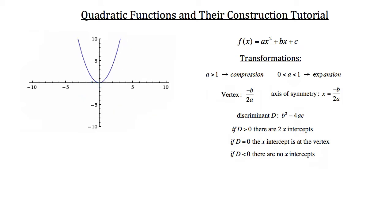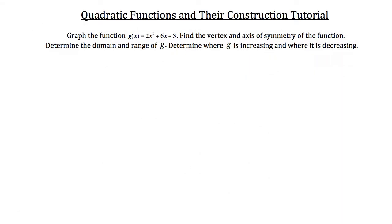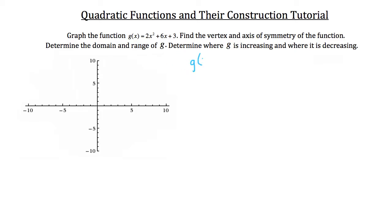Now that we've reviewed quadratic functions, let's look at a word problem. Graph the function g(x) = 2x² + 6x + 3, find the vertex and axis of symmetry, determine the domain and range, and determine where g is increasing and decreasing. To graph this, I want to find the vertex using the generic vertex form f(x) = a(x - h)² + k, where h and k refer to the x and y coordinates of your vertex respectively.